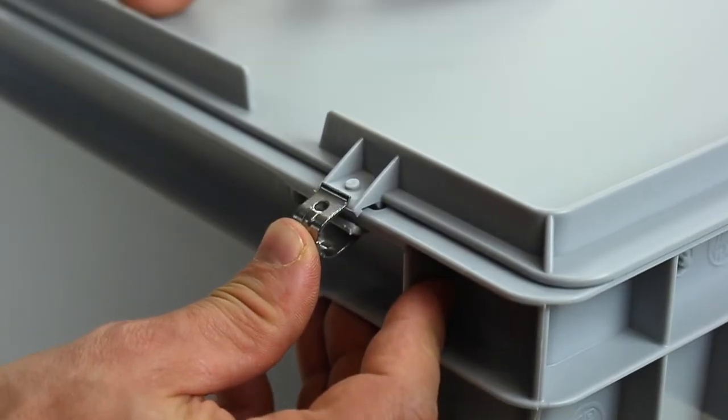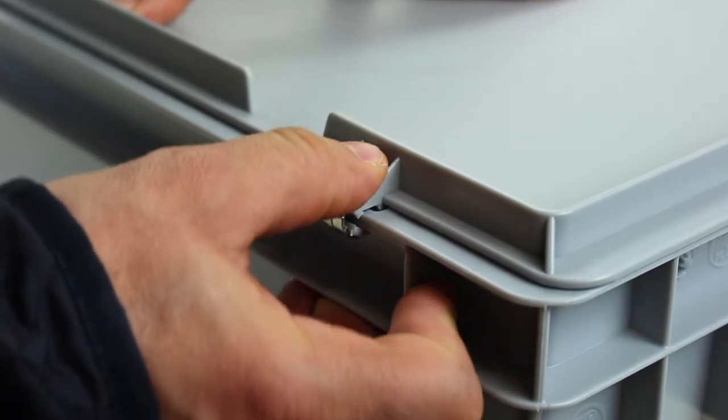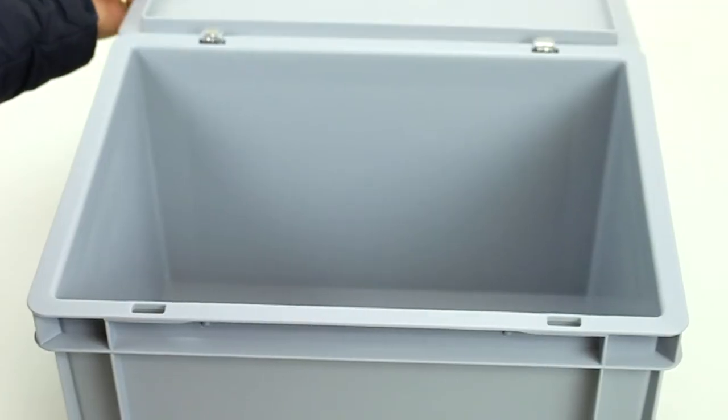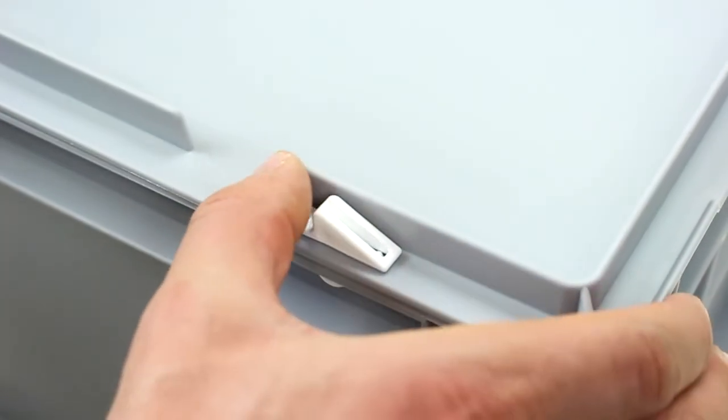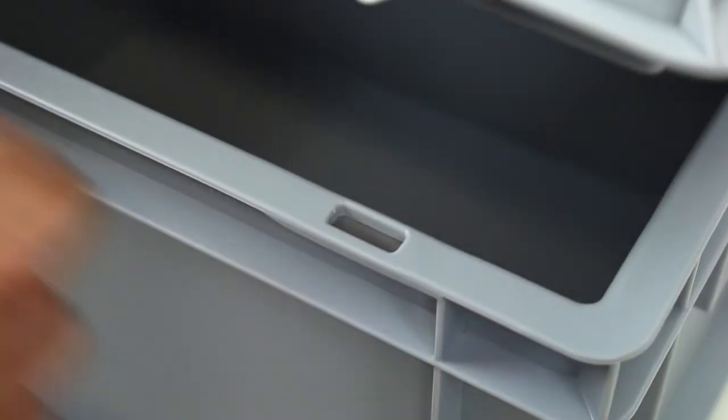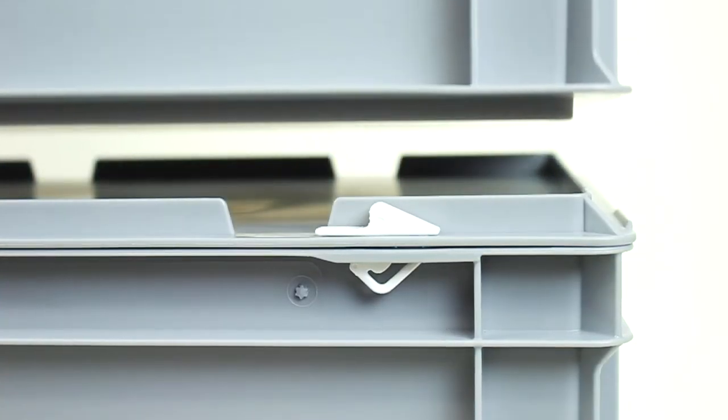The lid can also be attached permanently to the box by applying metal clips. The added option of snap locks can be used to keep the lid securely locked. To unlock, simply slide both snap locks outwards. All lids have